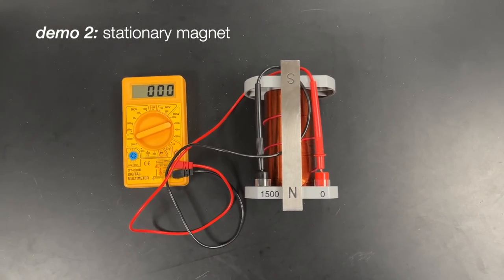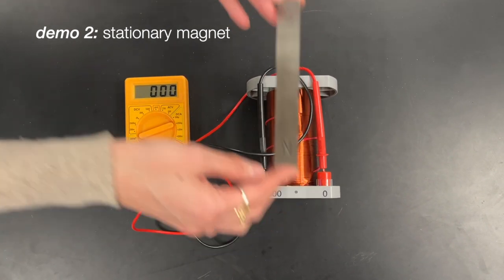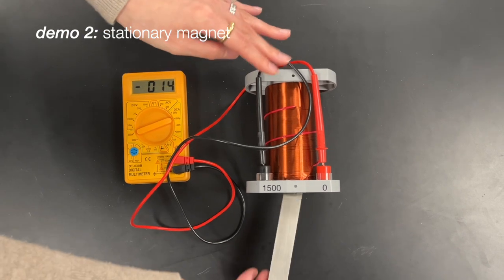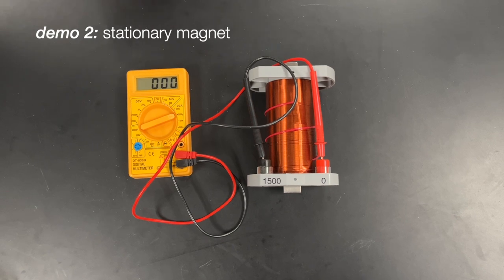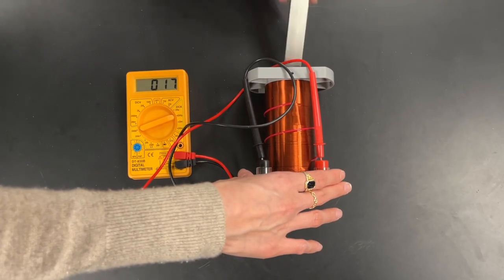But what if I place the magnet inside of the secondary coil? Once it settles and it's not moving, there is no current. But what if now this magnet is moving? As you can see, when I move it out, there's some motion in the numbers.